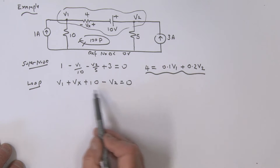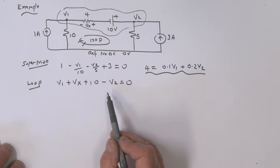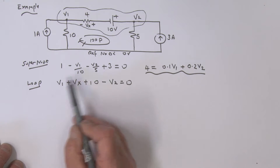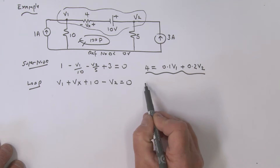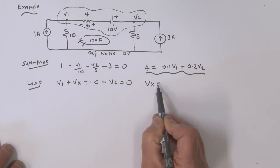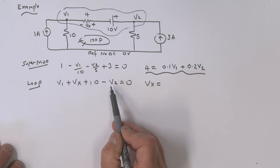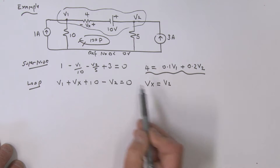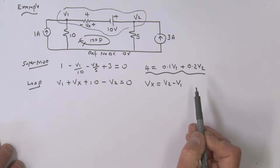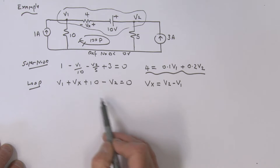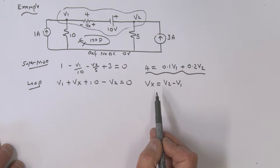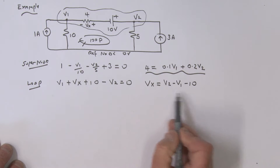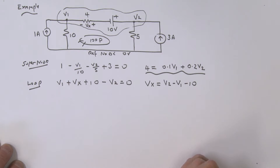Writing this equation in terms of Vx — taking everything else to the other side — Vx equals V2 minus V1 minus 10. That is the expression for Vx.